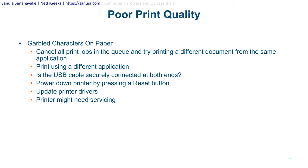Garbled characters on paper — where characters print on top of each other — can be fixed by canceling all print jobs in the queue, printing a different document, or printing from a different application. Some applications have difficulty communicating with certain printers due to different communication methodologies. Also verify the USB cable is securely connected at both ends, update printer drivers, and if none of these work the printer may need servicing.